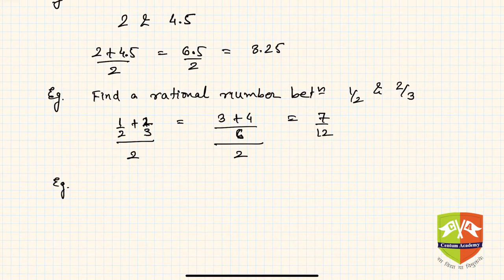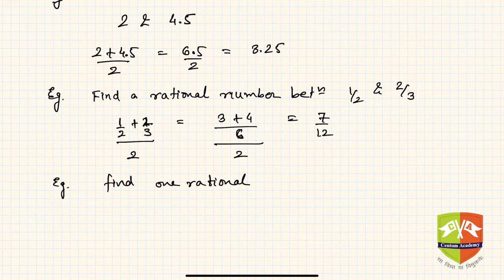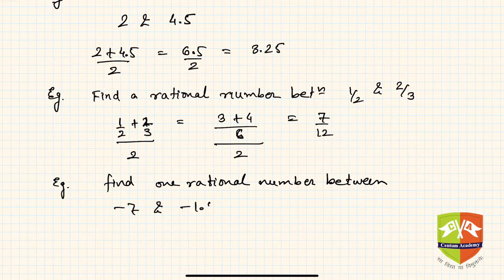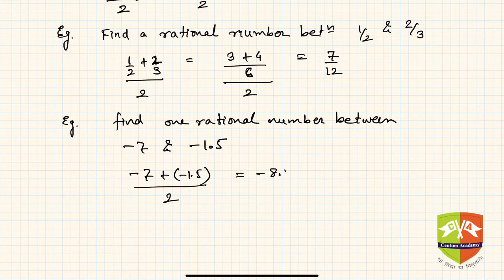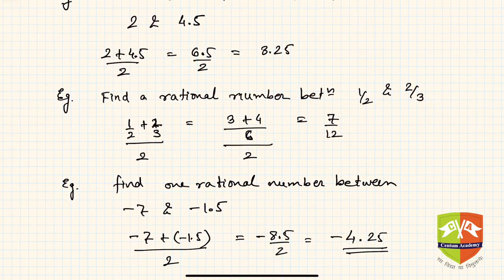The process does not change if one or both of the numbers are negative. For example: find one rational number between −7 and −1.5. You simply add them and divide by 2: (−7 + (−1.5)) / 2 = −8.5 / 2 = −4.25, which lies between the two numbers.